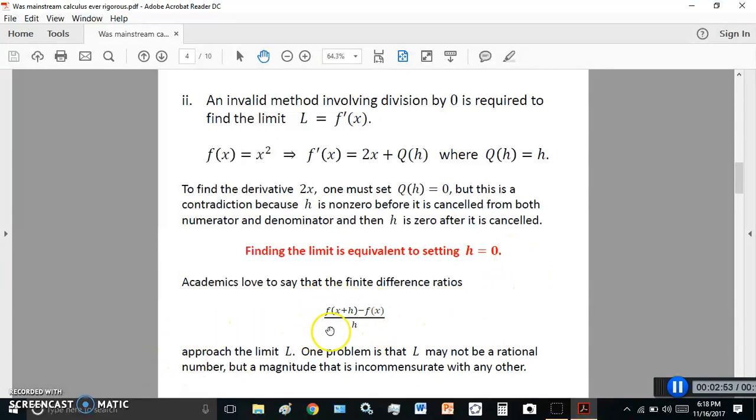So, academics love to say that the finite difference ratios approach the limit L. But the problem is that L may not be a rational number, but some incommensurable magnitude. So, to say that there's no division by zero is, quite frankly, delusional. You can't get 2x unless you divide by zero.